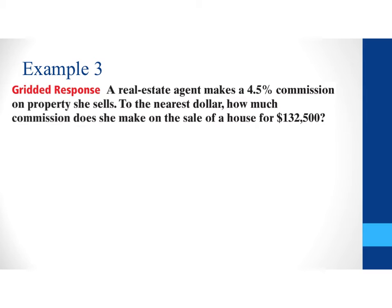For example 3, it says a real estate agent makes a 4.5% commission. A commission just means that they get some extra money based on the property that they sell and that's common in sales. So, the more you sell the more you make because you get a certain amount of that. So, it says to the nearest dollar how much commission does she make on the sale of a house of $132,500?